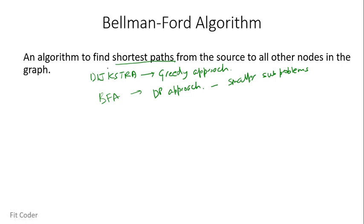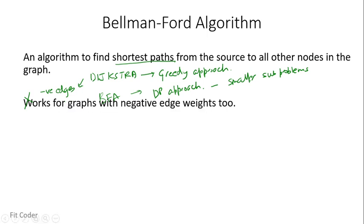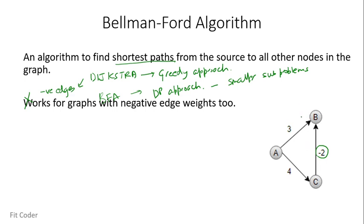One problem with Dijkstra's algorithm was it doesn't work with graphs that have negative edges. But Bellman-Ford algorithm has overcome that problem and it works with graphs that have negative edge weights. So if we are given a graph with a negative weight edge, Dijkstra will fail to find the shortest path, because once a vertex has been marked and visited in Dijkstra, it doesn't revisit it.